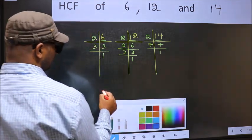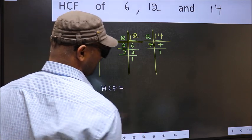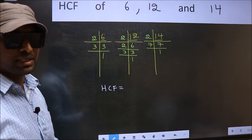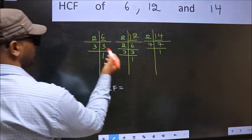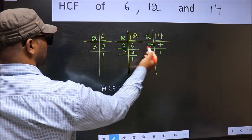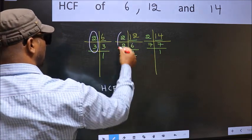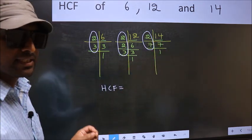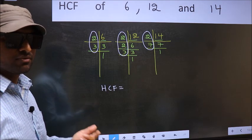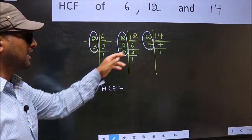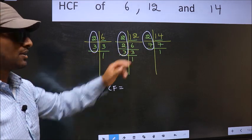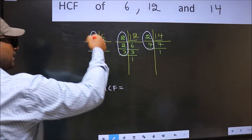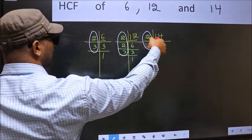Therefore, our HCF is the product of the numbers which should be present in these 3 places. I repeat, HCF is the product of the numbers which should be present in these 3 places. So, now let us find the numbers which should be present here and here and also here.